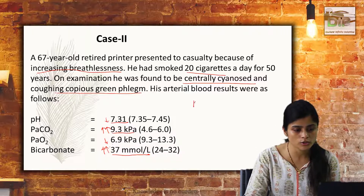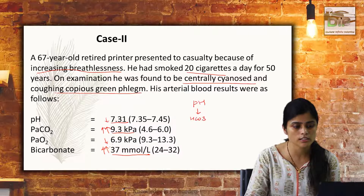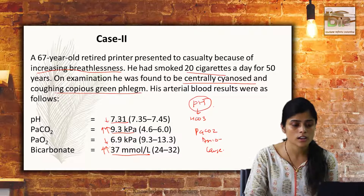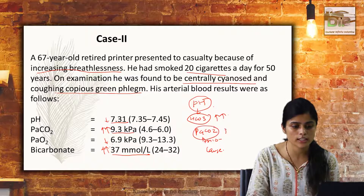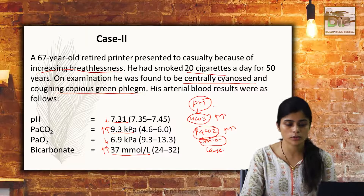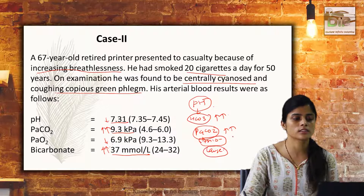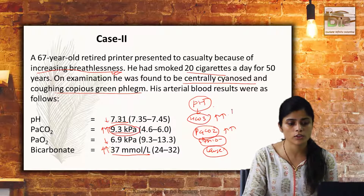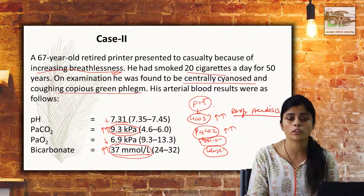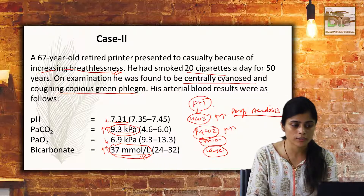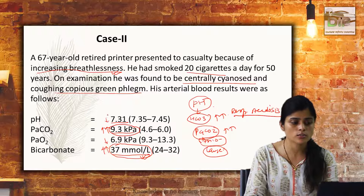Looking at the five-step approach: pH is slightly decreased, bicarbonate level is in the increasing trend, PCO2 is very high, and the anion gap may be normal since we don't have the blood picture for the other electrolytes. The cause is that the patient came with breathlessness; since PCO2 is increased, it is mainly because of respiratory acidosis, and compensation is taking place by reabsorbing more and more bicarbonate, with more H+ being excreted — but only partly compensated.